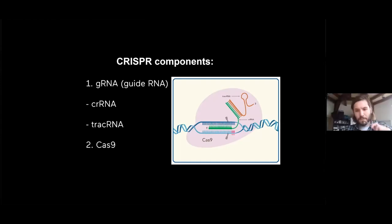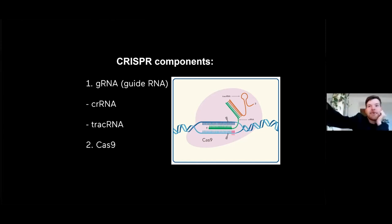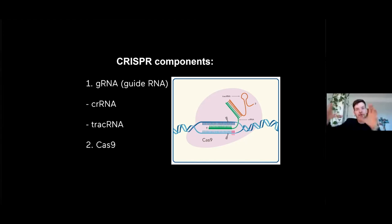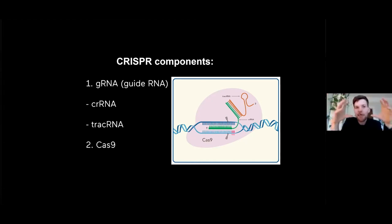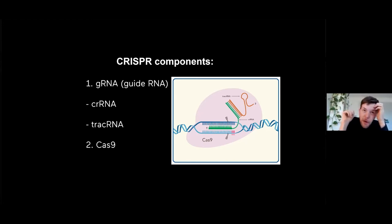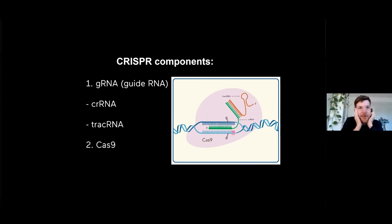CRISPR has two components. The guide RNA has multiple pieces: the crRNA and another RNA part. One part of the RNA is designed to bind to the Cas9 protein - the protein that actually cuts. The other part is designed to match a specific 20-nucleotide region in the DNA - basically like search-and-replace in a word processor. Cas9 cuts exactly there. In our case we don't use cells; it's all in vitro. We add the Cas9 proteins and guide RNA together in a tube and they cut the DNA.